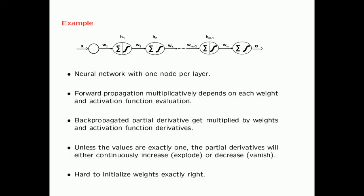Unless the product of the weight and the activation derivative is exactly one, you will typically have some level of instability. It is very hard in most cases to initialize the weights exactly right. We have shown an example with scalar weights, but the same problem will generally occur even when you use multiple nodes. In certain types of networks, you can show that it depends on the eigenvalues of the matrices of weights.